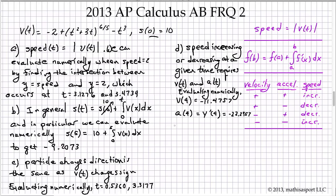From the table, since both V of 4 and A of 4 are negative, the speed is increasing. Now that's the tried and true way of doing it.